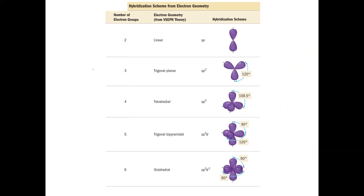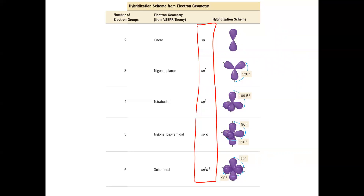To summarize: to determine hybridization — whether sp, sp2, sp3, sp3d, or sp3d2 — simply look at your electron geometry and the number of electron groups or domains attached. This is a really important concept, especially if you're moving on to organic chemistry or biochemistry. I hope this was helpful, and thanks for tuning in.